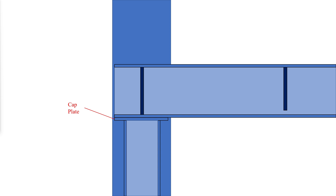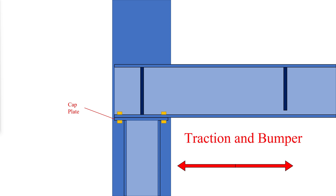If the cap plate girder bolts are placed between the column flanges, the girder end rotation is resisted by a force couple between the column flange and the bolts — a detail known to cause bolt failures. Preferably, the girder should be bolted to the cap plate outside of the column flanges. The column cap plate should not be made overly thick, as this detail requires the cap plate to distort to allow for the end rotation of the girder. The girder to cap plate bolts should be adequate to transfer the tractive or bumper forces to the longitudinal crane bracing.